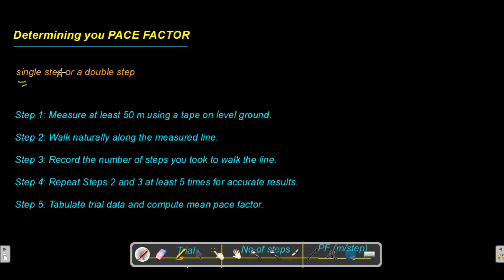These are the steps in getting the pace factor. First, you have to measure at least 50 meters using a tape on level ground. Make sure it's a level ground for more accurate measurements. 50 meters is not too short for precise measurements and not too far to walk for several trials.